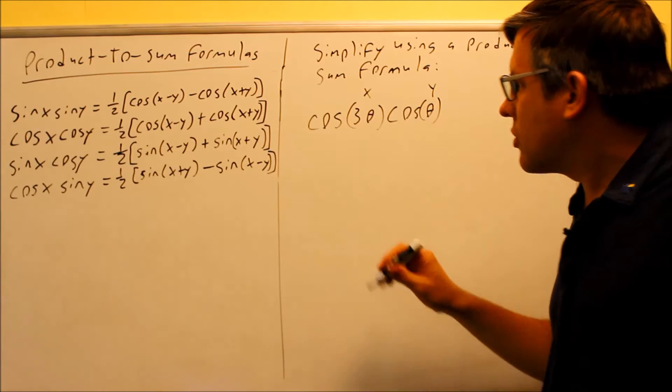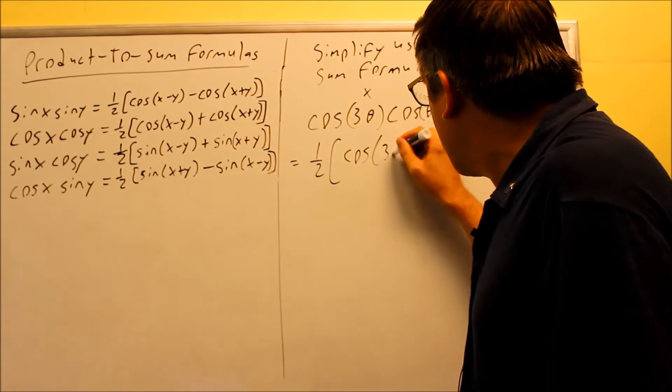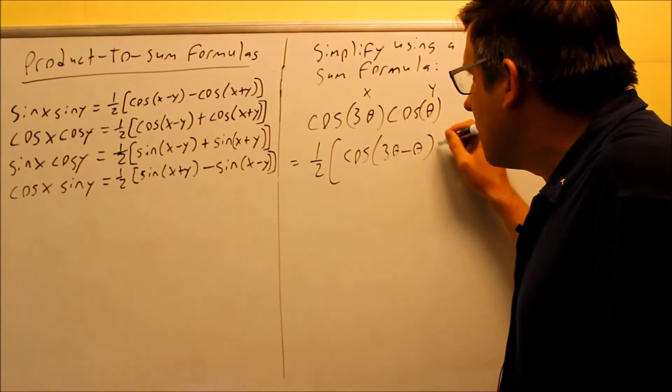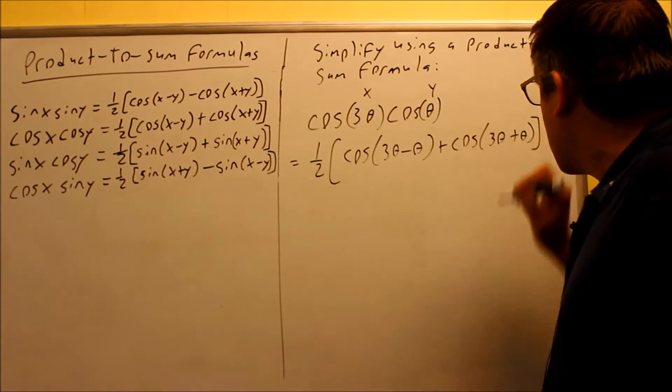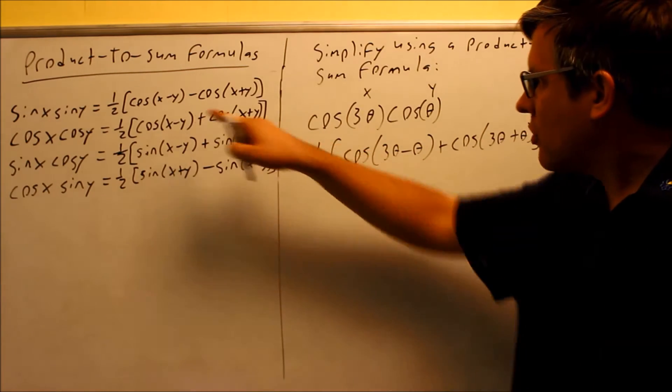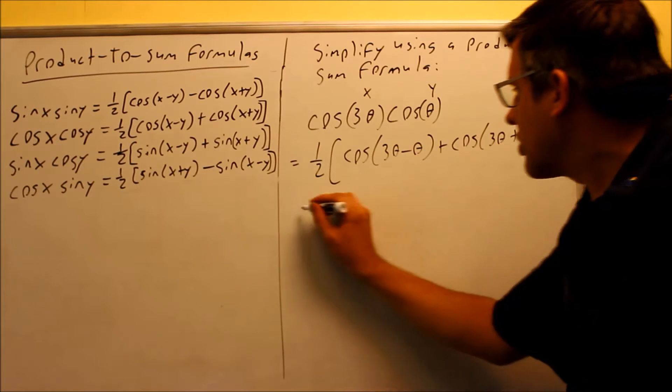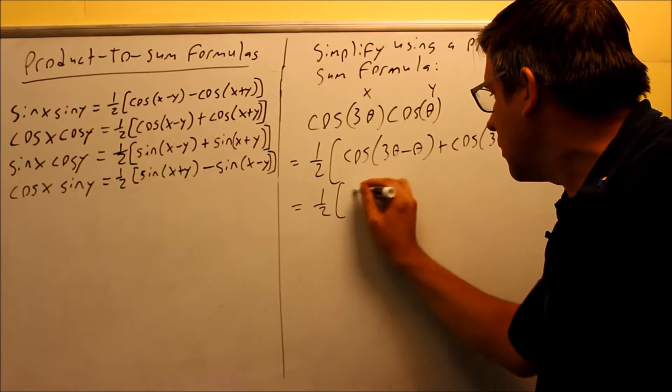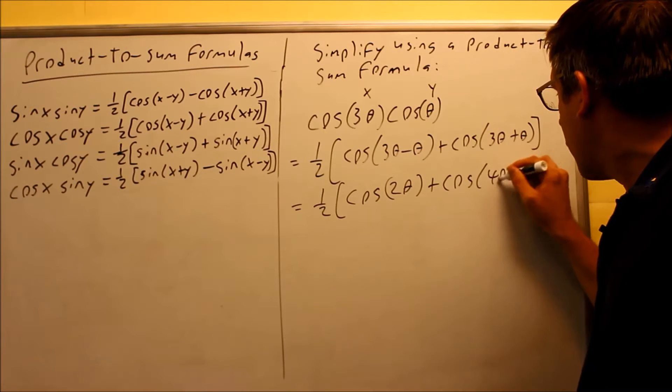We're going to substitute into this formula. One half, we have cosine 3 theta minus theta and then we have cosine 3 theta plus theta. Again, just substituting directly in from this formula here. 3 theta is x and theta is y. We're going to simplify it.